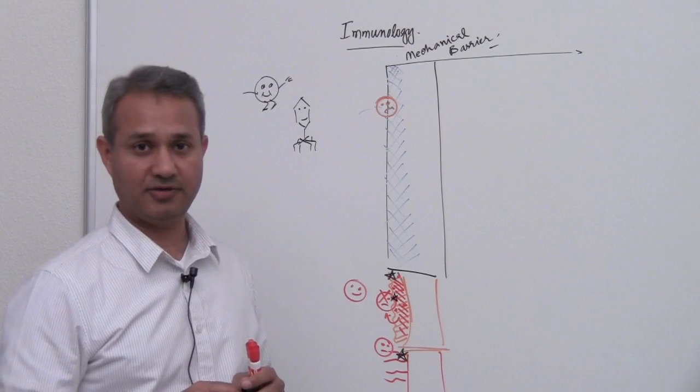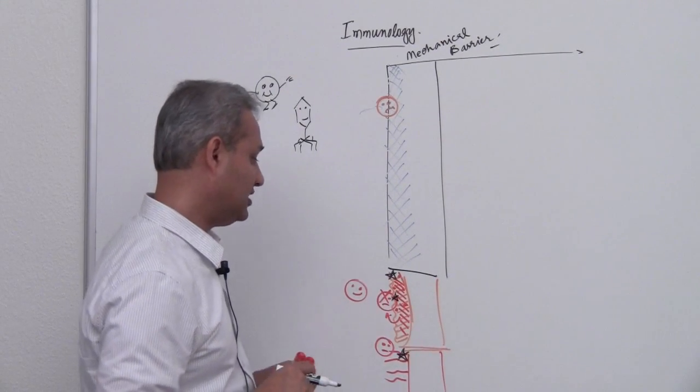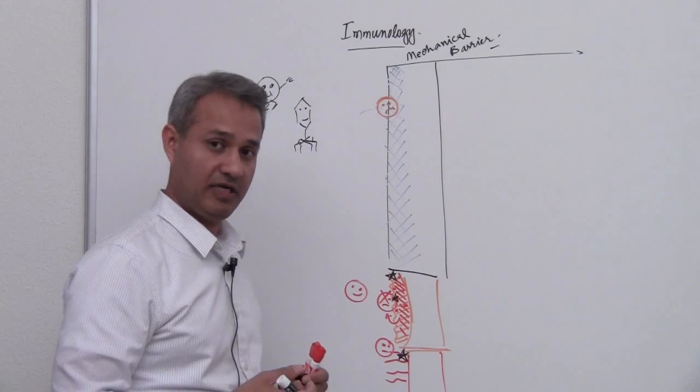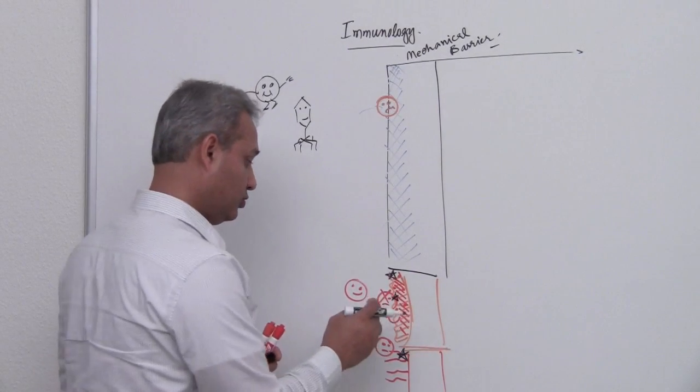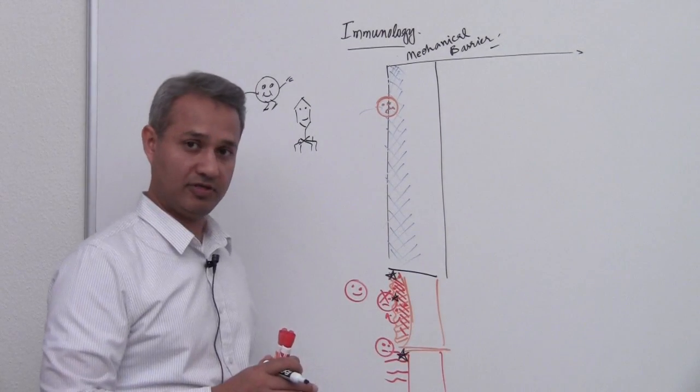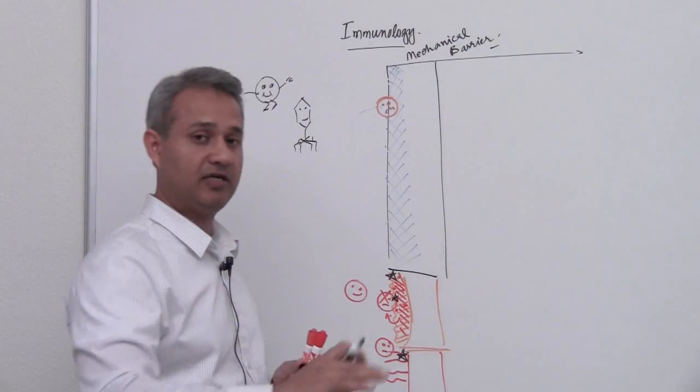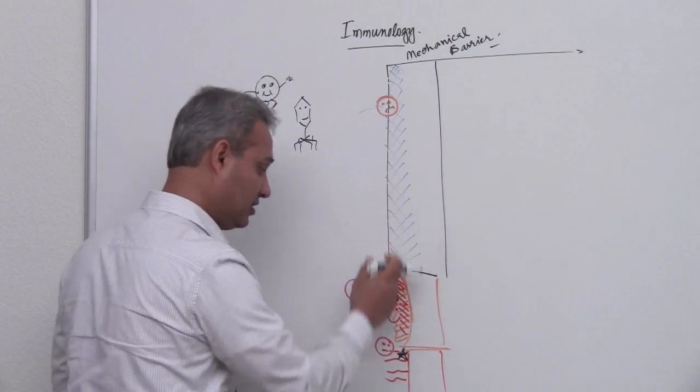Defensins can actually act to break the membrane of bacteria trying to enter our body at the surface level.